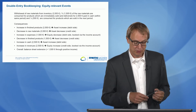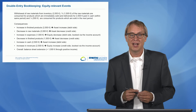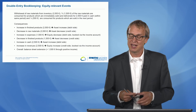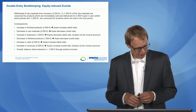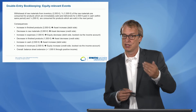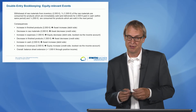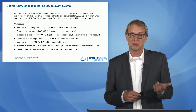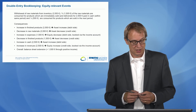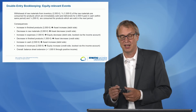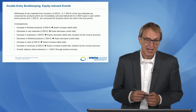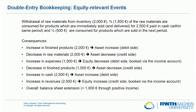We have an increase in finished products because the raw materials go into finished products — an increase of an asset — which happens on the debit side, on the left side of the book record. At the same time, because the raw materials are now part of the finished products, we have a decrease in raw materials, which is also on the asset side, so that happens on the credit side. This is essentially an asset swap.